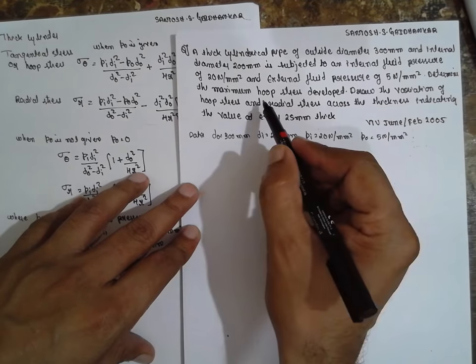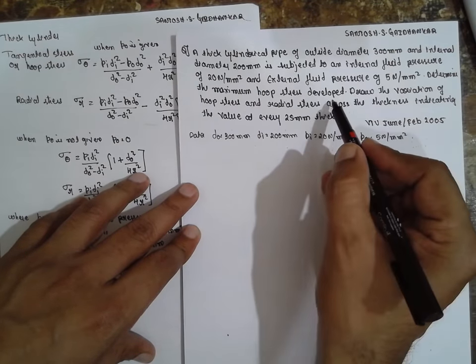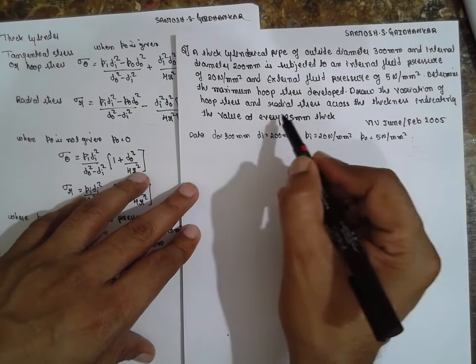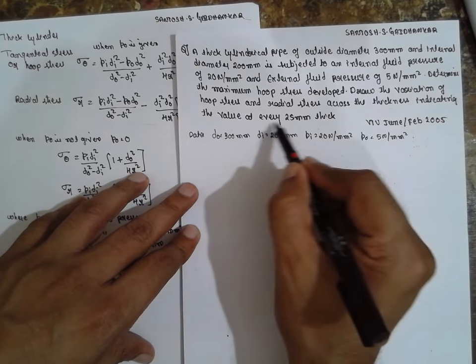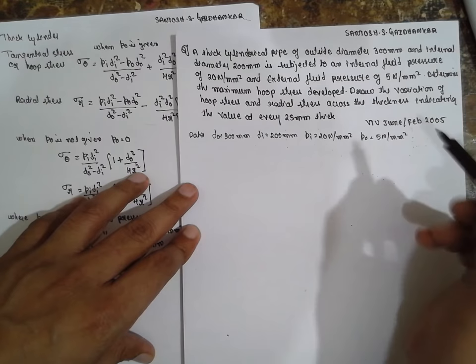We have to determine the maximum hoop stress, determine and draw the variation in the stress at every interval of 25 mm thick.